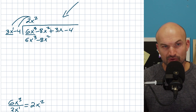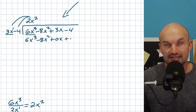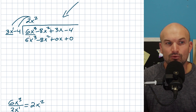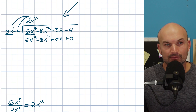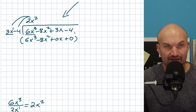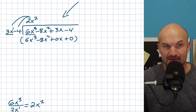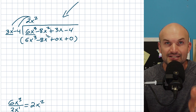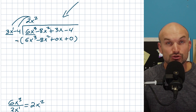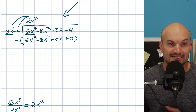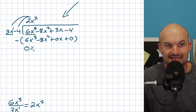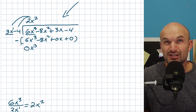Now I can either bring down the next terms or use place values to keep track of everything. I'm not a fan of place values, but they help keep things tidy. After writing the product below, we're going to subtract these two lines. It's very important to use brackets because we're subtracting the whole bottom line from the top line. 6x³ minus 6x³ is just zero, so we don't need to write it.